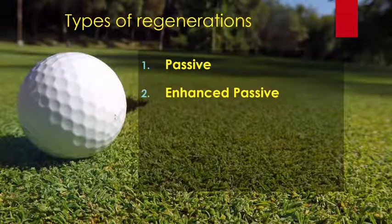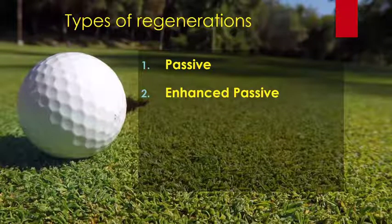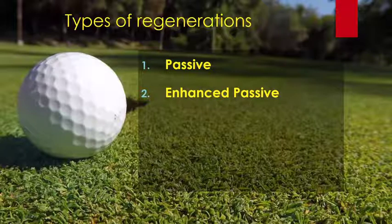Enhanced passive regeneration is when the soot level in the DPF reaches a predetermined level and the vehicle operating conditions are not resulting in sufficient exhaust gas temperatures to promote sufficient passive regeneration. The engine ECU activates the enhanced passive regeneration strategy, closes the air throttle, and changes injection timing to increase the exhaust gas temperature to a level that promotes passive regeneration. The engine is allowed to be operated normally with no fuel dosing, and no indicators are present on the operator interface during enhanced passive regeneration.